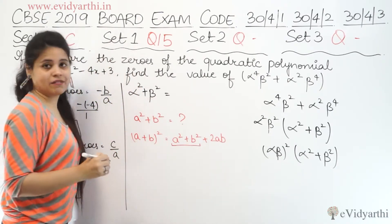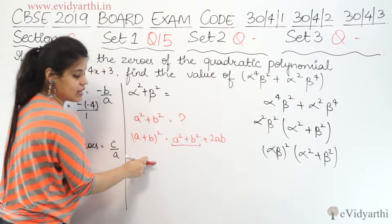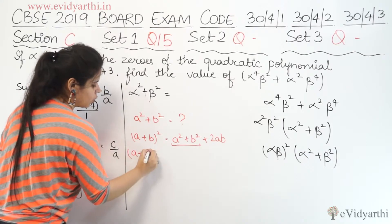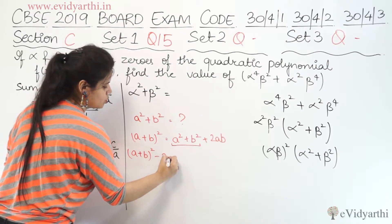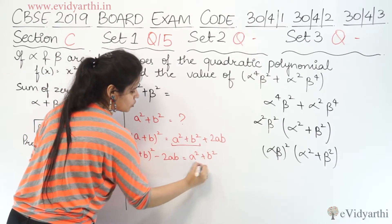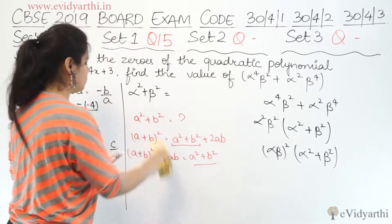Equal to a² + b² + 2ab, correct? So if I have a² + b², this is (a + b)² - 2ab. This means a² + b², we've got the identity.